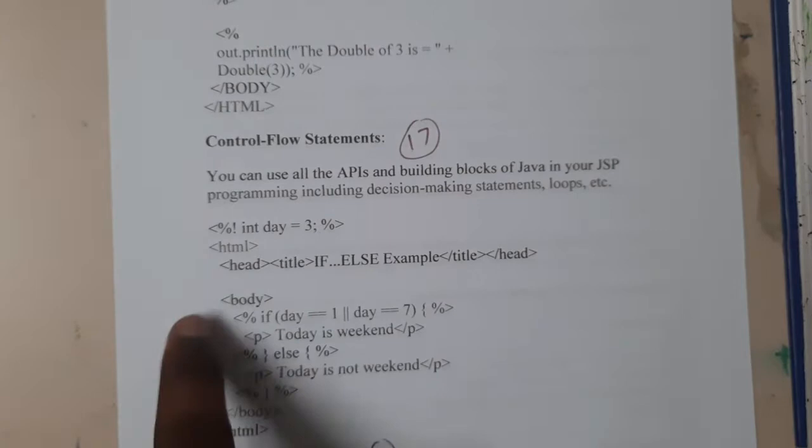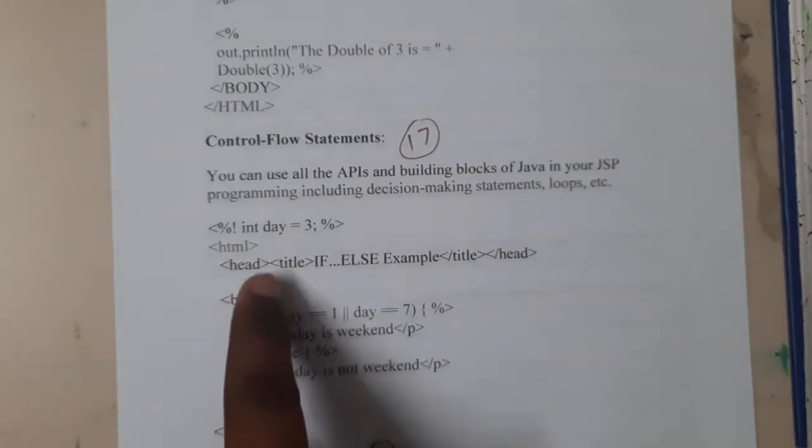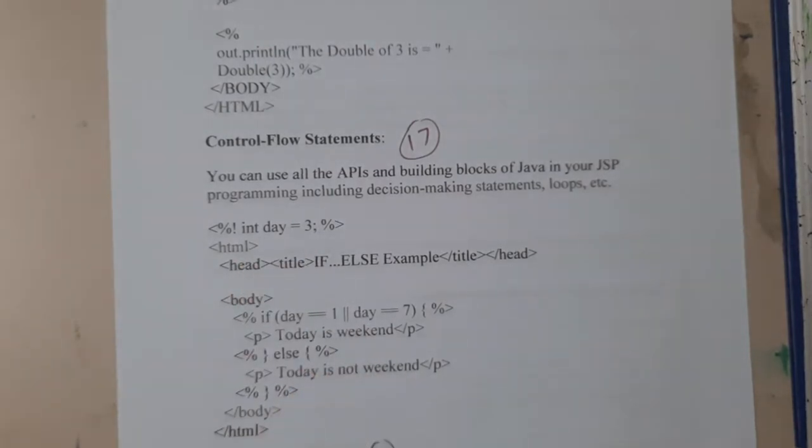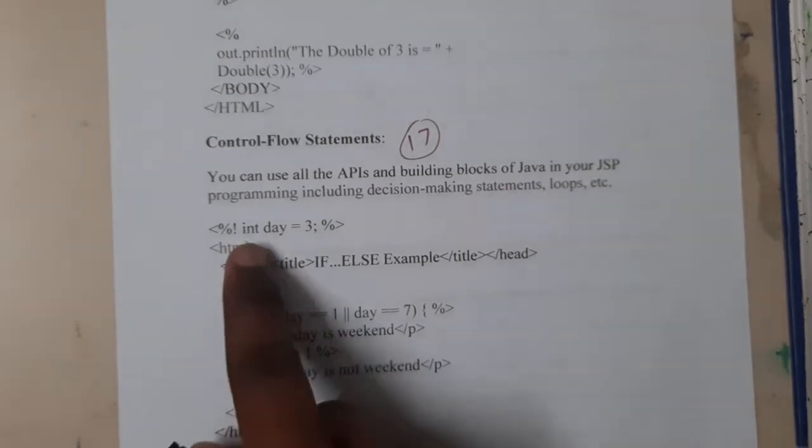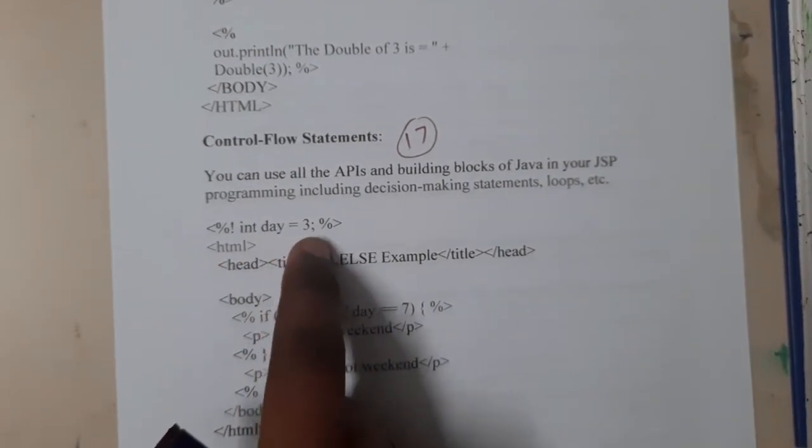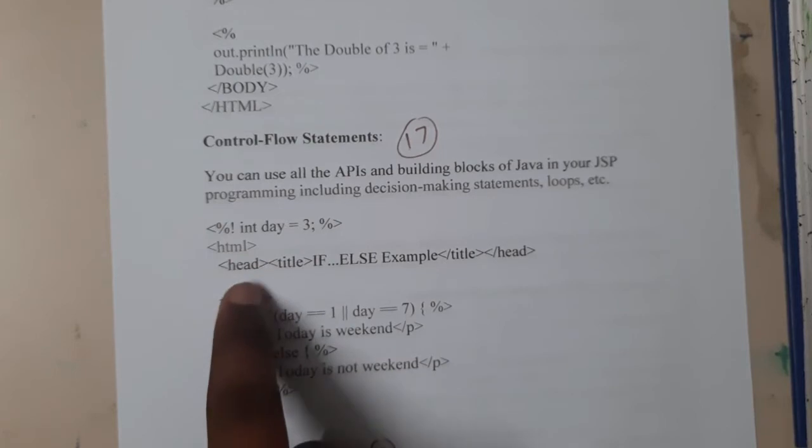Here we will be having only decision statements, that is nothing but if, if-else, switch, and if-else ladder. So here we took a small example about days in a week. We initialized the value of day equal to three. We started our HTML.